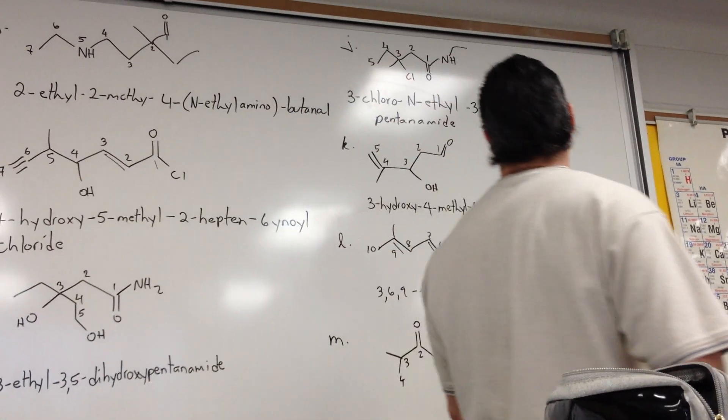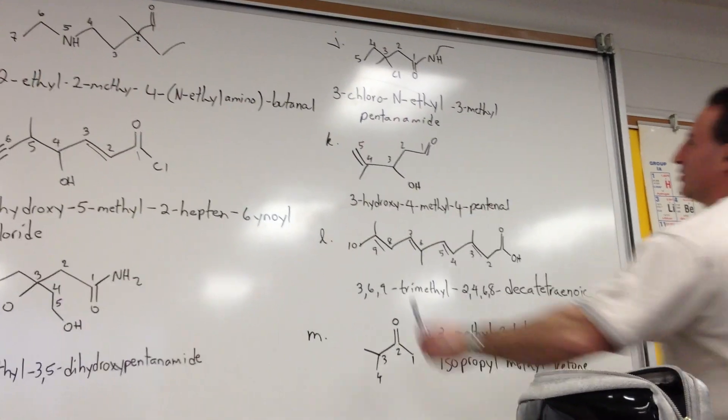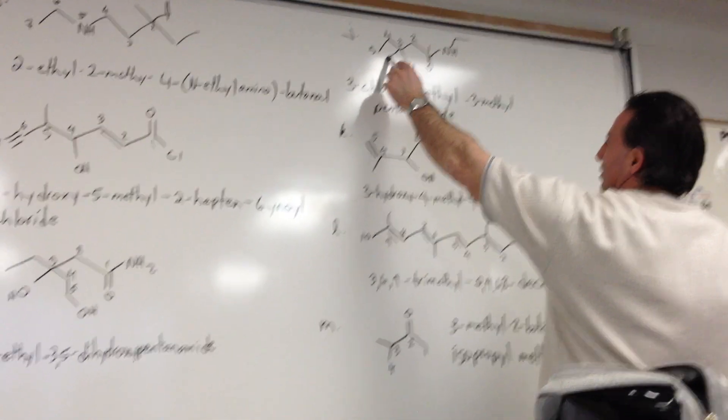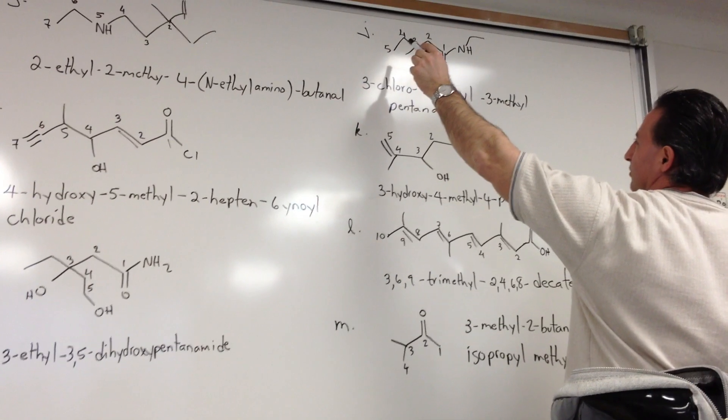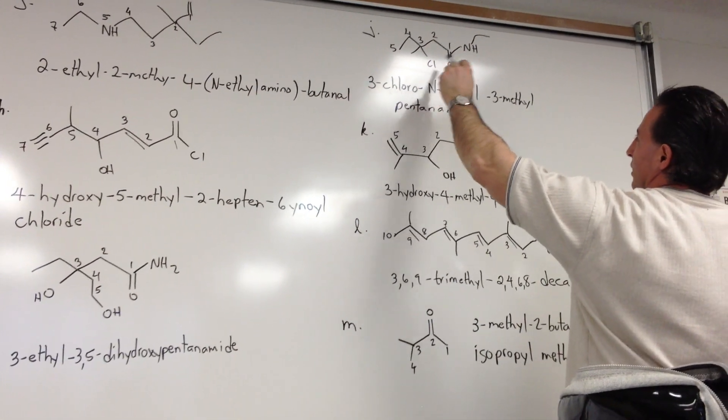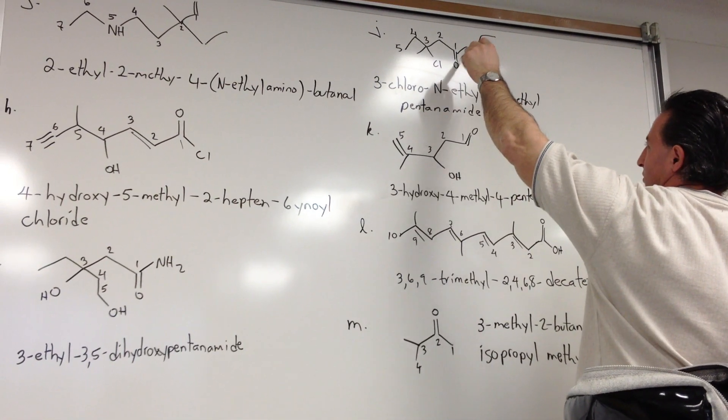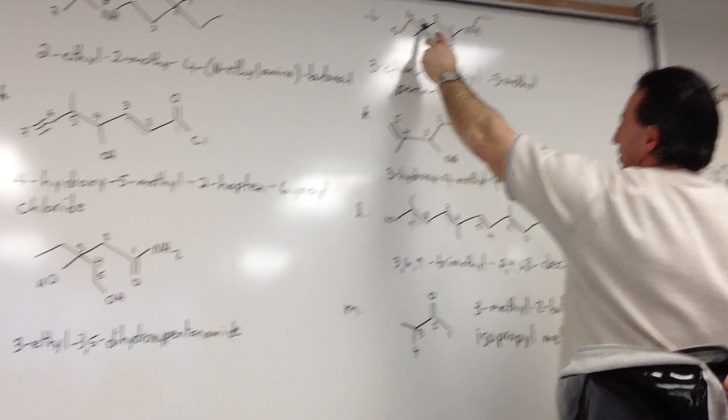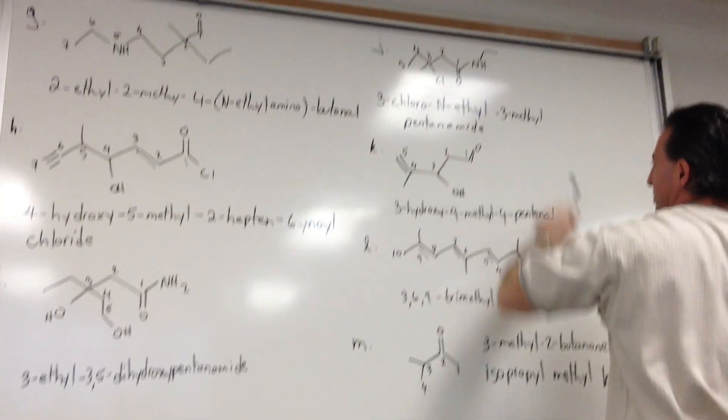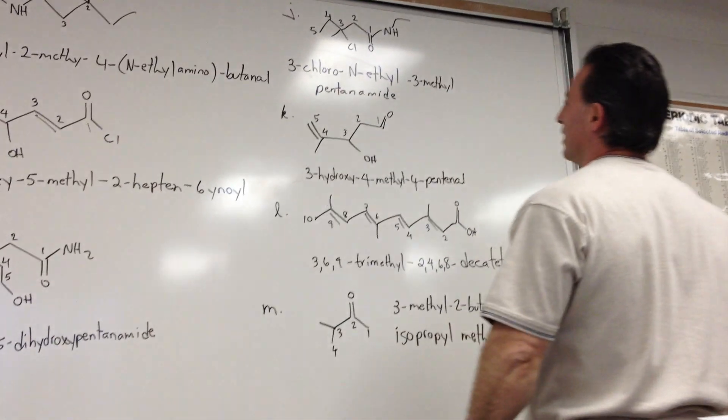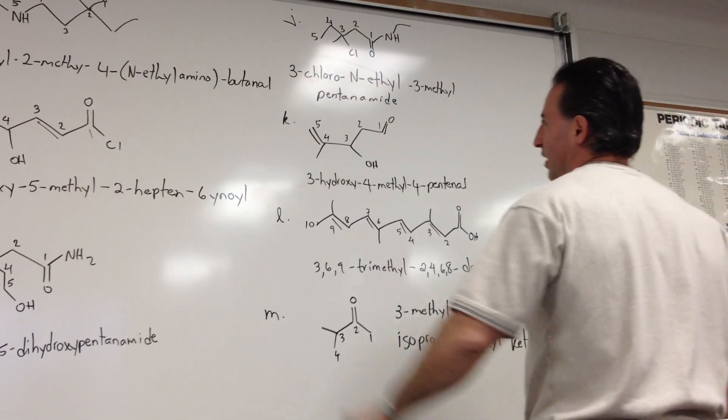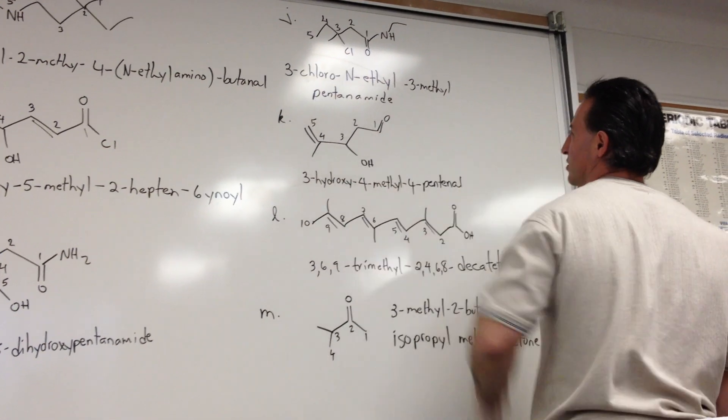J is also a pentanamide, except now it's substituted with a chloro and a methyl at the 3rd position. An ethyl at the nitrogen that is attached to the amide, a chlorine at the 3rd position, and a methyl at the 3rd position. So we call it 3-chloro-N-ethyl-3-methyl-pentanamide. Notice how we alphabetized the substituents.